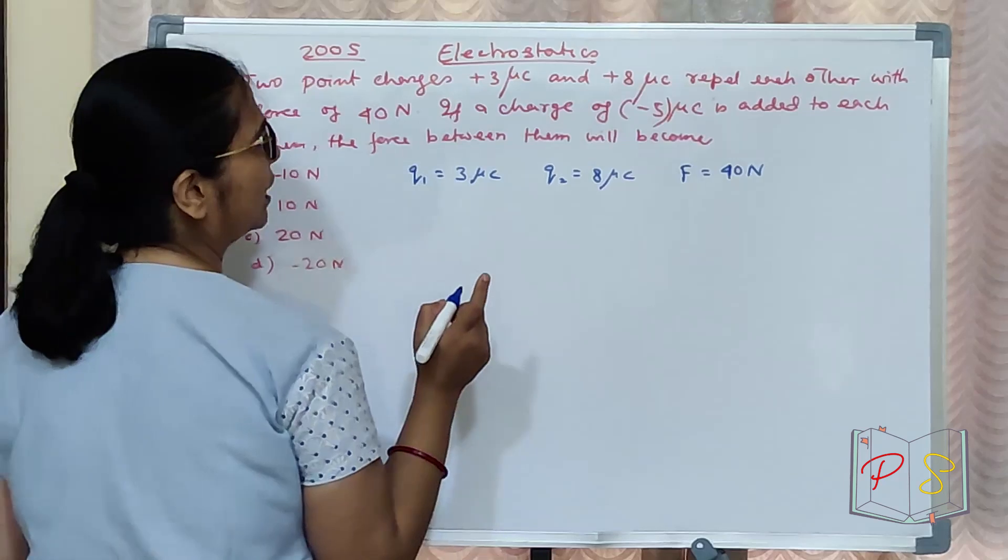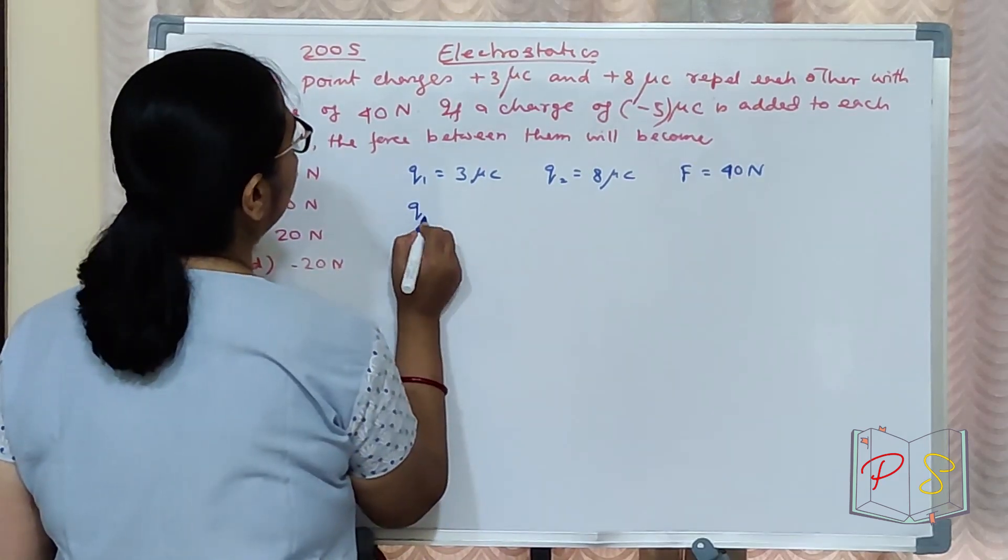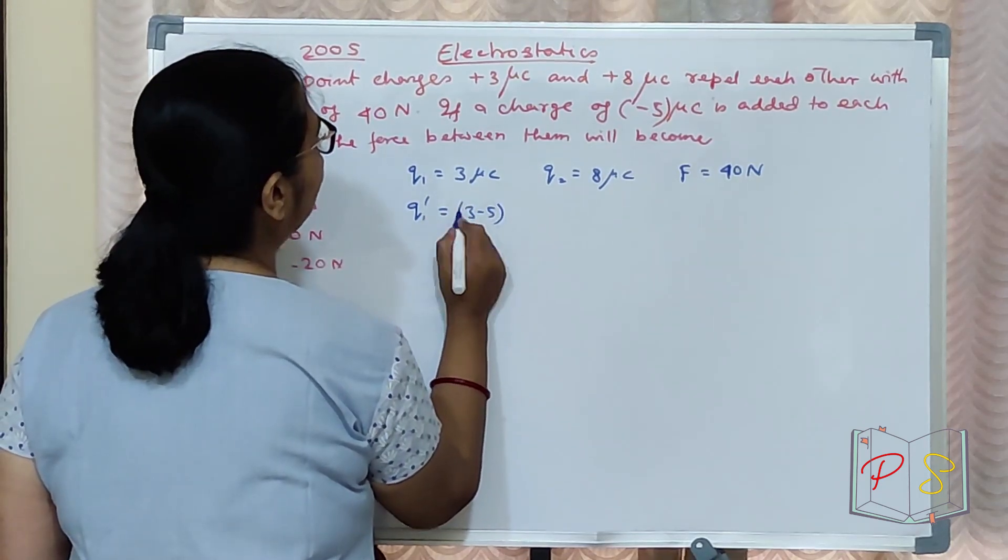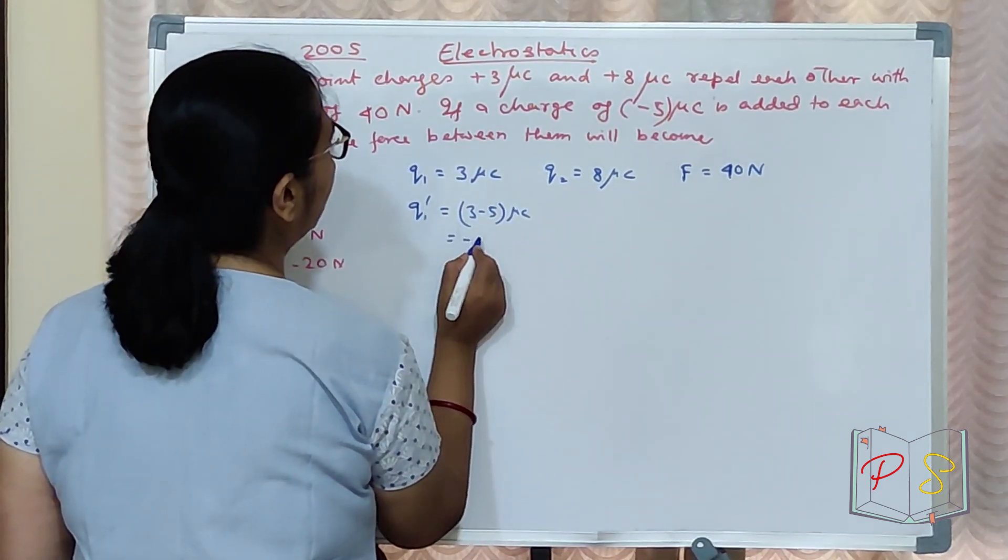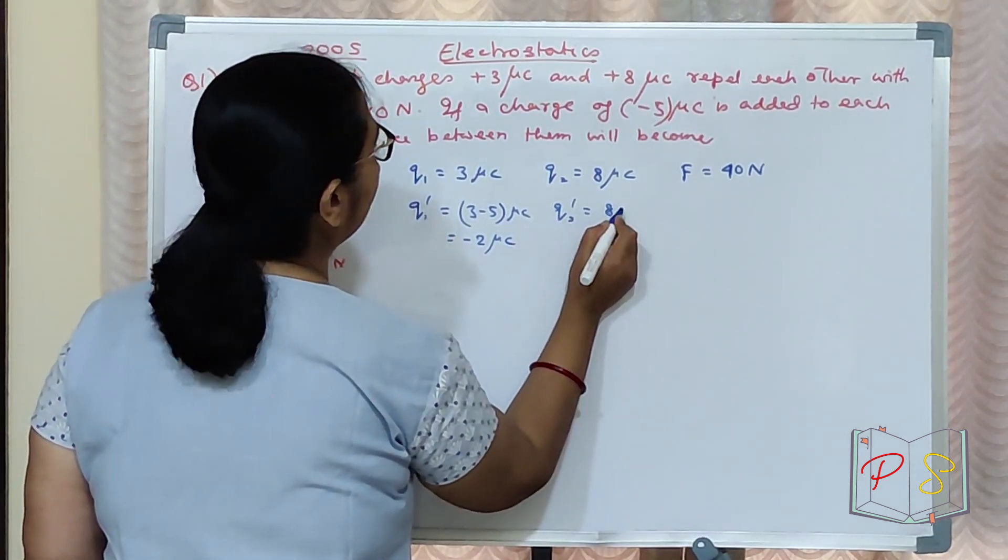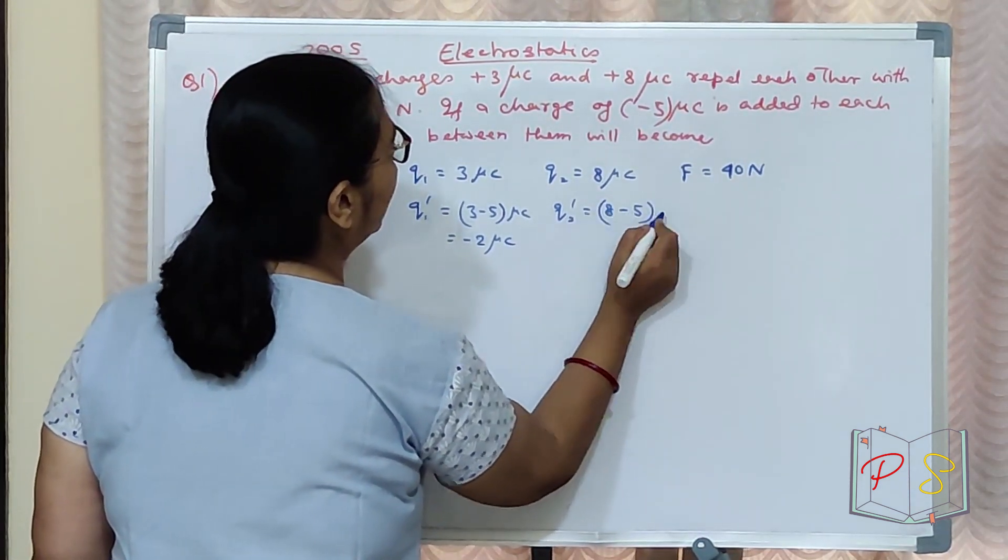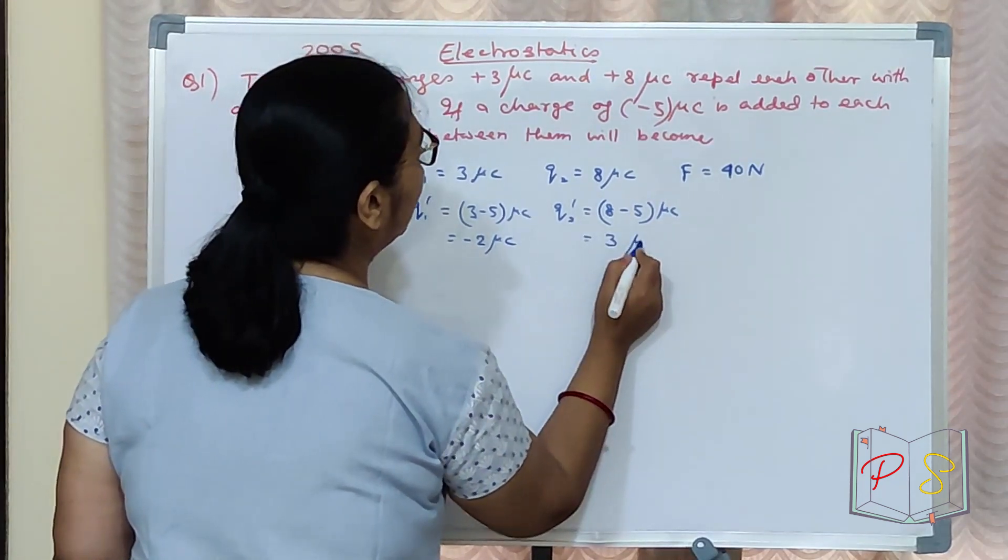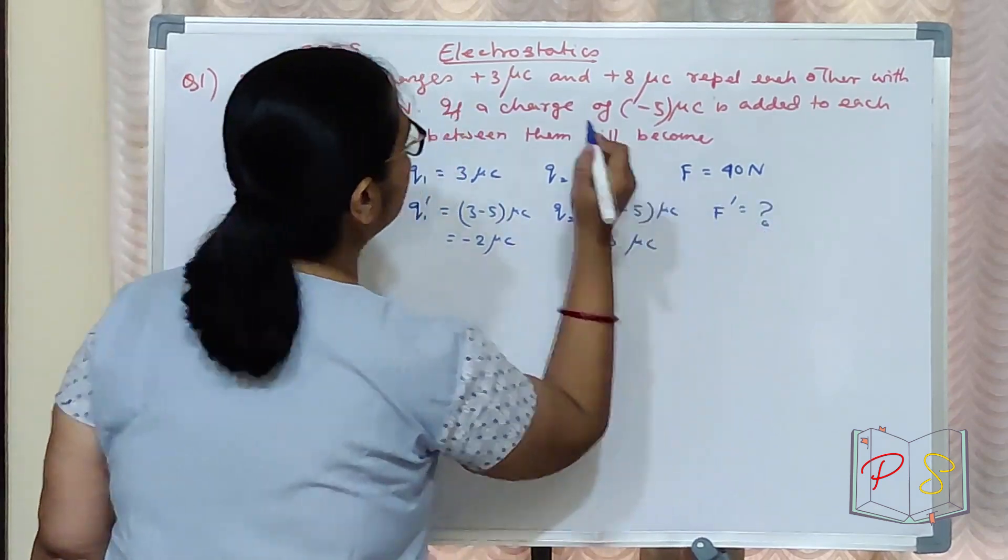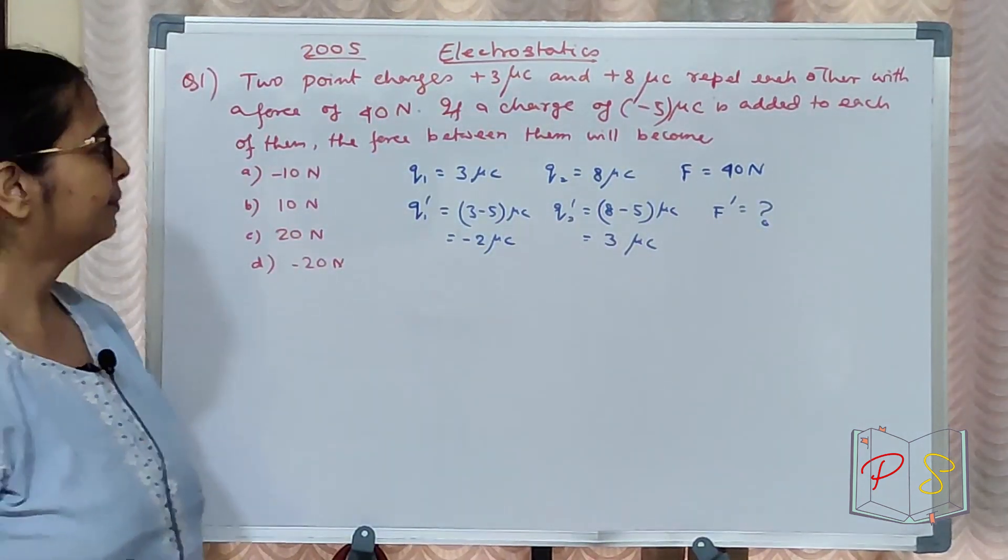Minus 5 micro coulomb is added. So Q1 dash becomes 3 minus 5 micro coulomb equal to minus 2 micro coulomb. Q2 dash becomes 8 minus 5 micro coulomb equal to 3 micro coulomb. Clear? F dash is what we need to find.